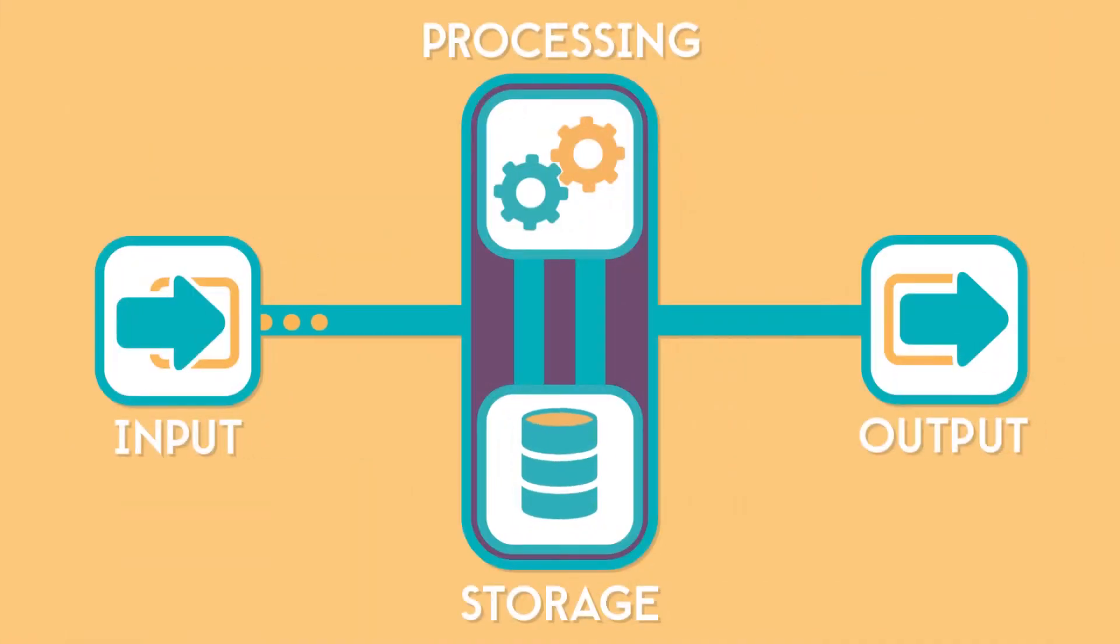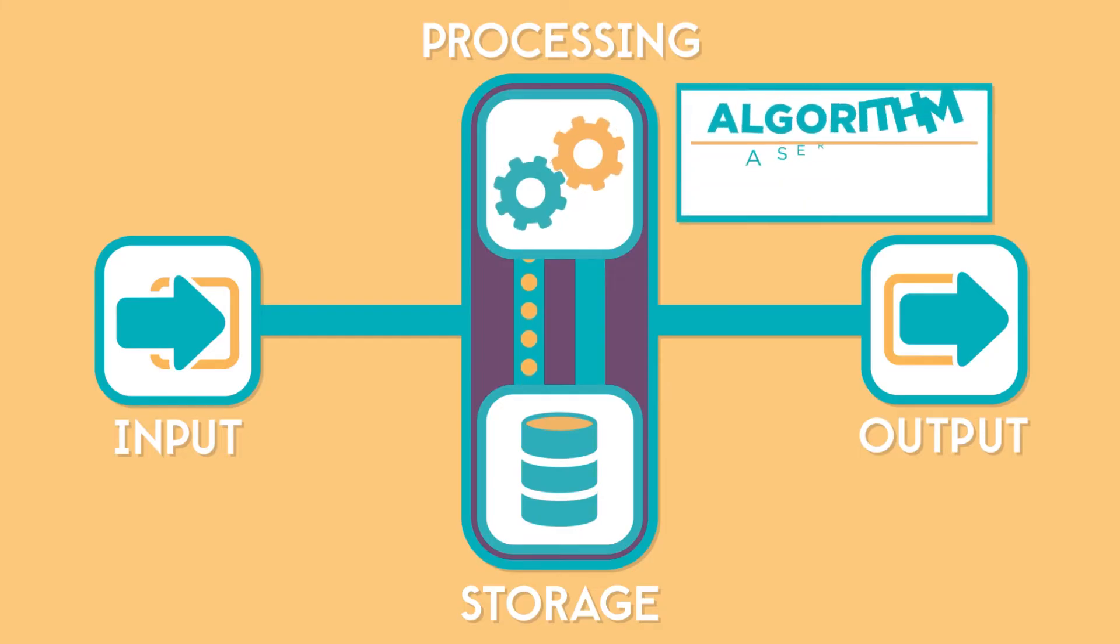All these different inputs give a computer information, which is then stored in memory. A computer's processor takes information from memory and manipulates it or changes it using an algorithm.